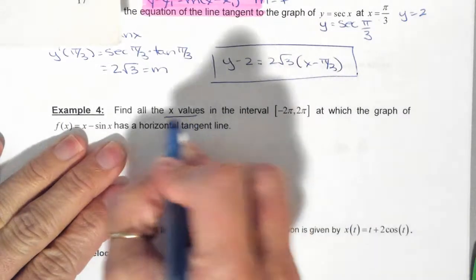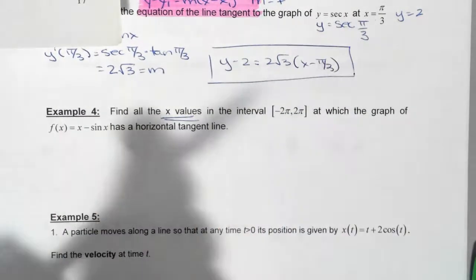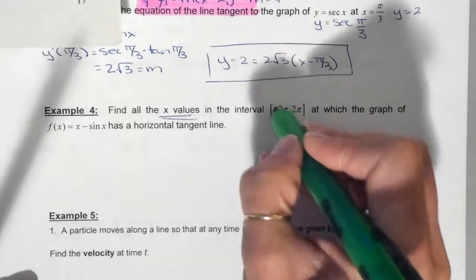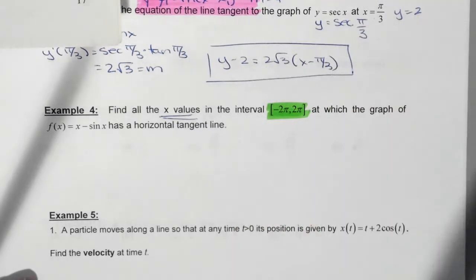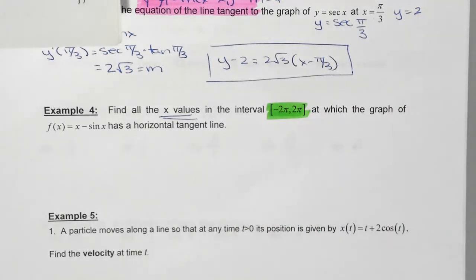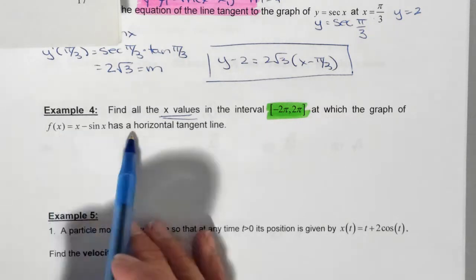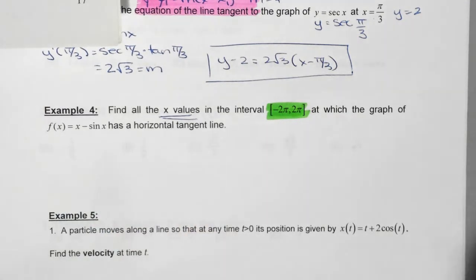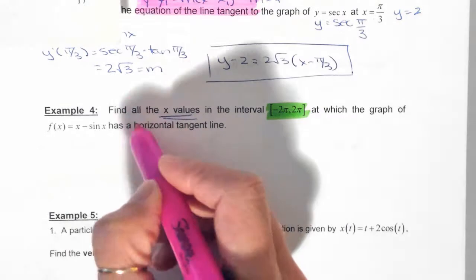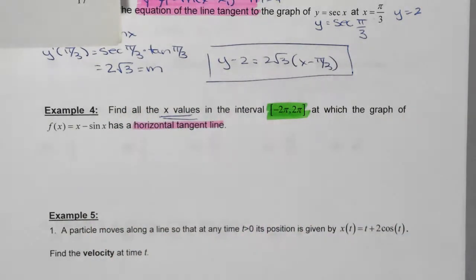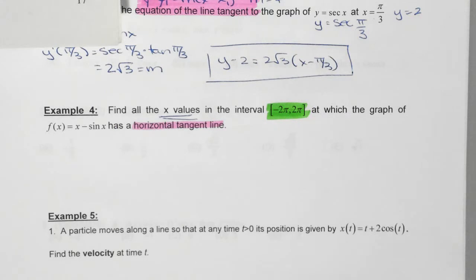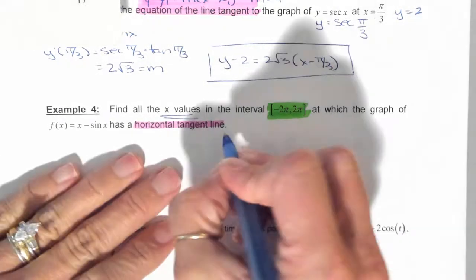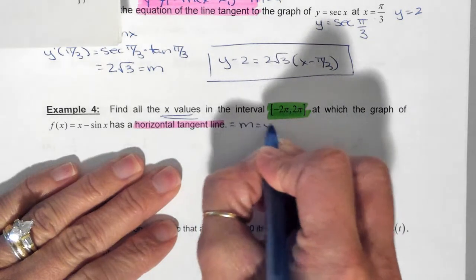Find all x values on the given interval. So now we're given specific intervals here. On which the graph of this function has a horizontal tangent line. So we've seen this before. What does this mean? Horizontal tangent line. What does it mean? What is zero? The slope is zero. Horizontal tangent line means the slope is equal to zero.